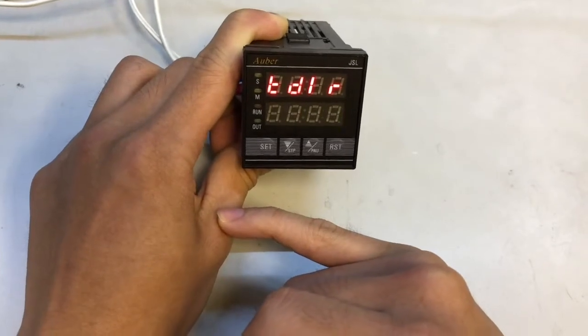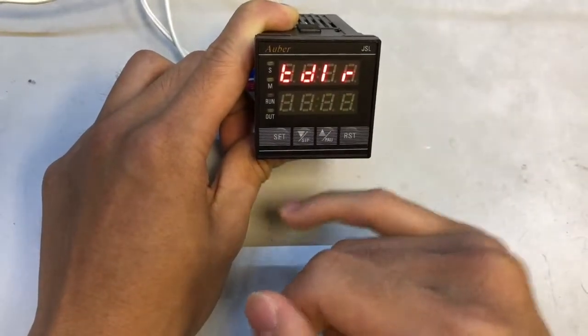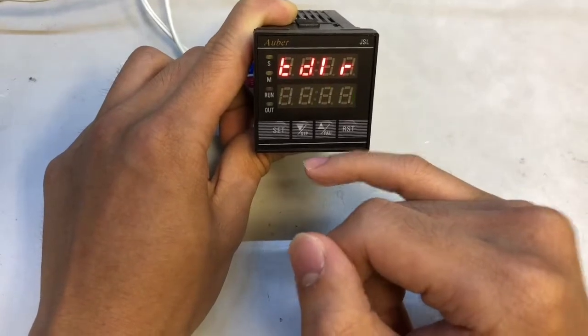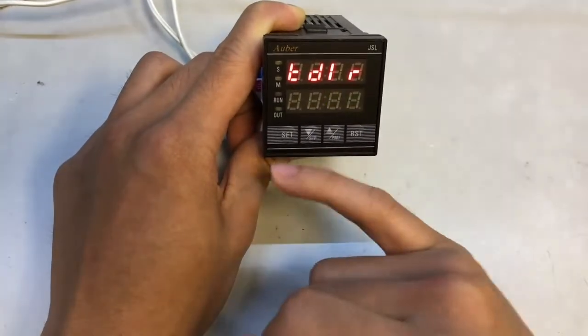This is our timing direction TDIR. This will determine whether your timer counts up or counts down. We're just going to keep it at counting down.